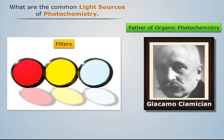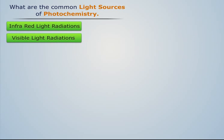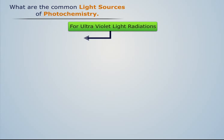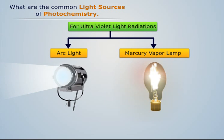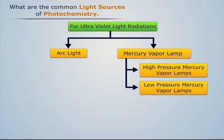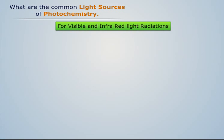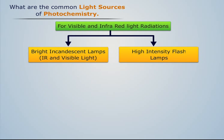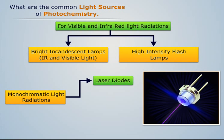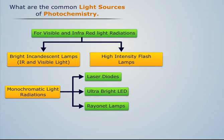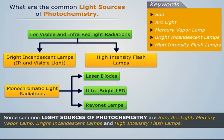In modern-day photochemical experiments, specific light sources are used to provide infrared, visible, and ultraviolet light radiations. Ultraviolet radiations are provided by UV light sources such as arc lights and mercury vapor lamps. Mercury vapor lamps are of two types: high pressure and low pressure mercury vapor lamps. For visible and infrared light radiations, bright incandescent lamps and high intensity flash lamps are used. In cases where monochromatic light is needed, semiconductor light sources such as laser diodes, ultra-bright LEDs, and rayonet lamps can be used.